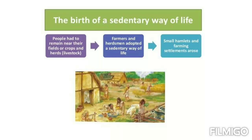We have now understood the importance of the Neolithic Age. The Neolithic Revolution led to the settled life of early humans. Agriculture, which became an important occupation of that time, provided a regular supply of food. The domestication of animals added a steady source of meat, milk, and wool, and animals could also be used to do work. Last but not least, it was the single most important development in human history that led to the formation of villages and civilization.